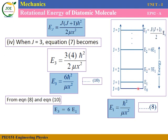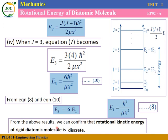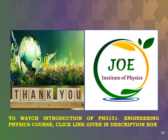From quantum mechanics, energy exists in discrete sub-energy levels, not a continuous band. From the above equations, we confirm that the rotational kinetic energy of the rigid diatomic molecule is discrete, not continuous. Thank you everyone — this is the fourth video and responses and comments from the previous three videos have been received.